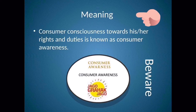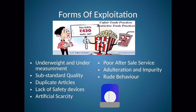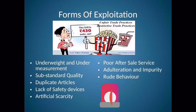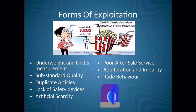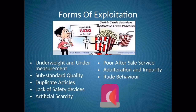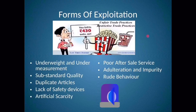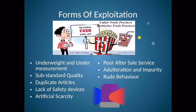Now let us see what malpractices or unscrupulous activities sellers or producers used to perform, which led to exploitation of the consumer. First is underweight and undermeasurement. Many goods in the market have a particular stated weight, but when the consumer uses the product, he finds it was underweighted or undermeasured — the scales used by sellers are manipulative and they sell lesser quantity than what is shown on the product. Next is substandard quality. Many products are sold at a quality different from the description, such as medicines sold beyond the expiry date or products sold in a defective condition.